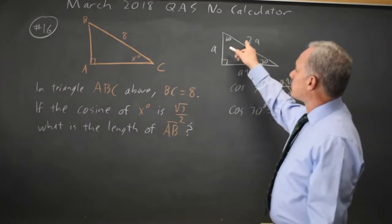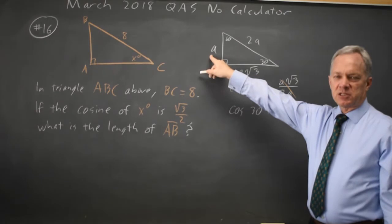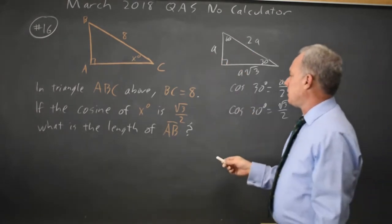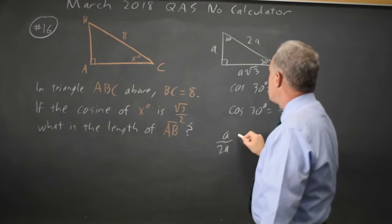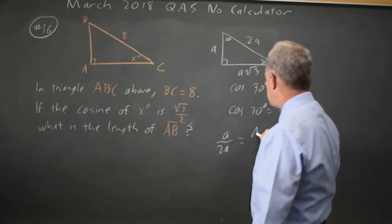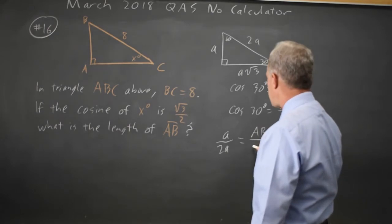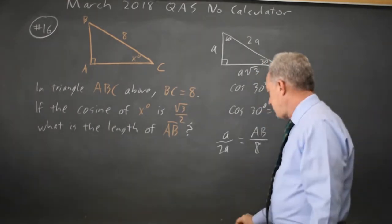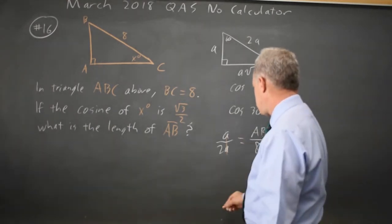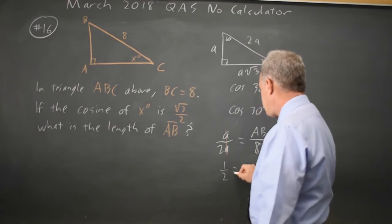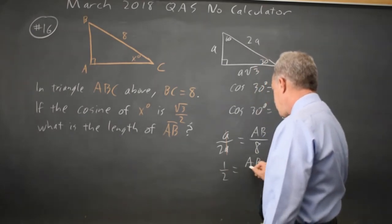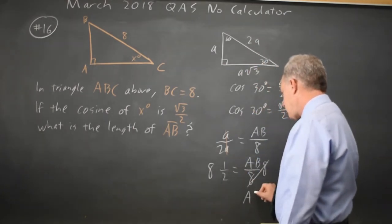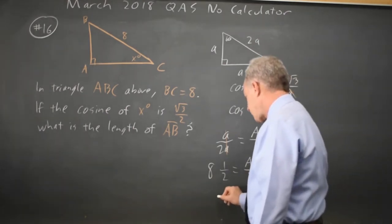In this triangle, we know from the formula sheet at the start of the math section that the short side over the hypotenuse is A over 2A. So 1 half equals AB over 8. If I multiply both sides by 8, AB is half of 8, which is 4.